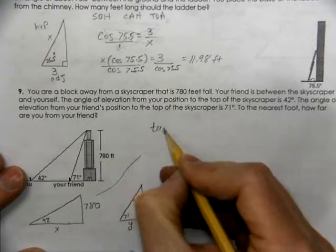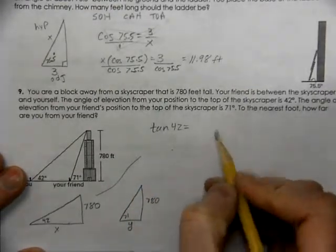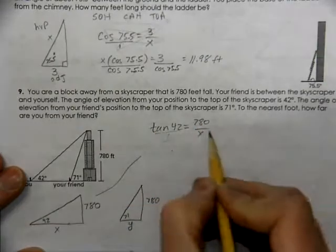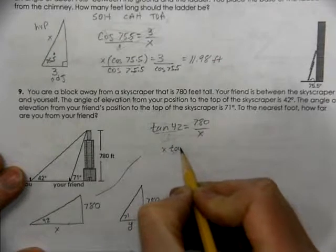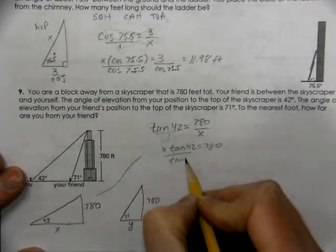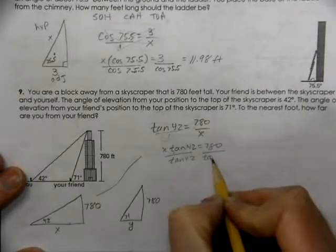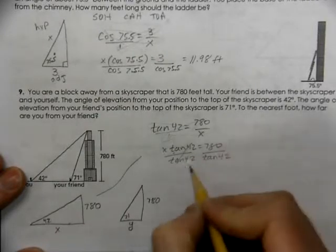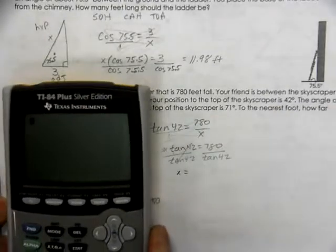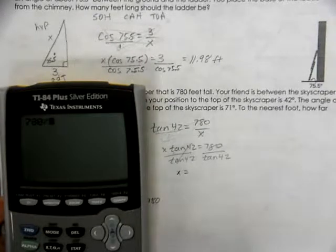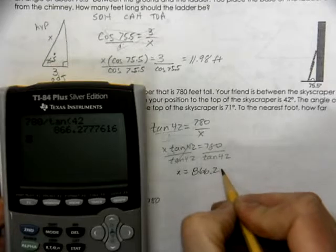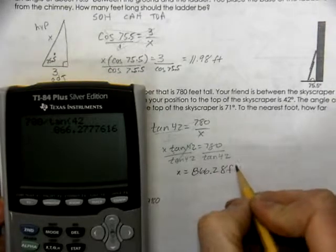So, we're going to do tangent of 42 degrees equals opposite over adjacent. Put it over 1, cross multiply. So, using our calculator, we're going to get 780 divided by the tangent of 42. That gives us 866.28, and that's feet.